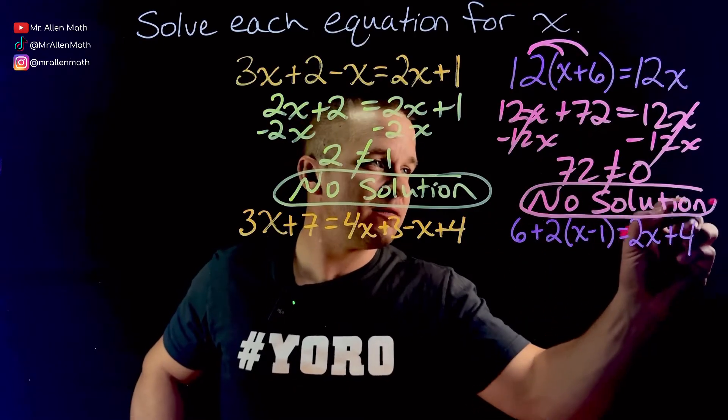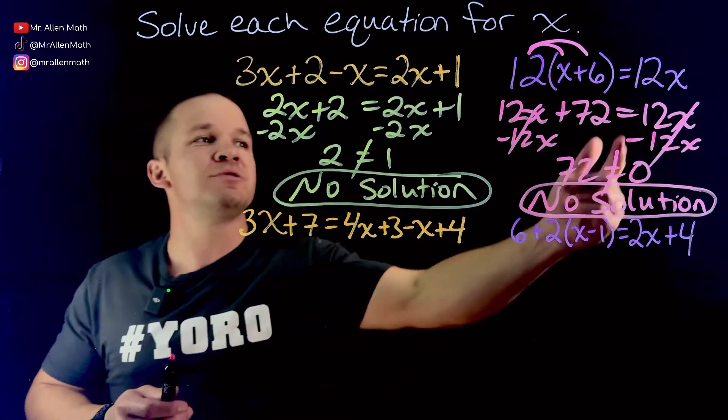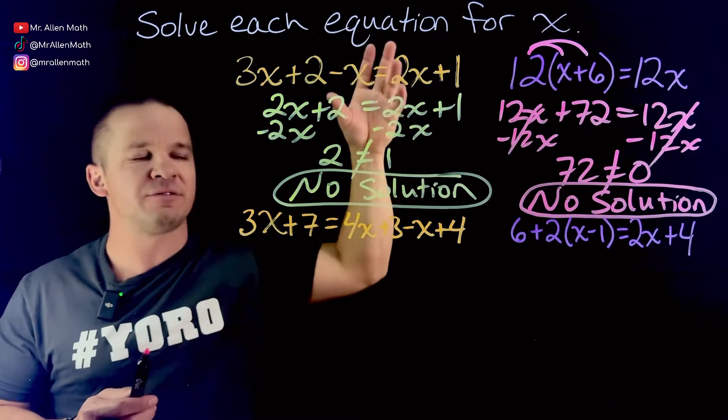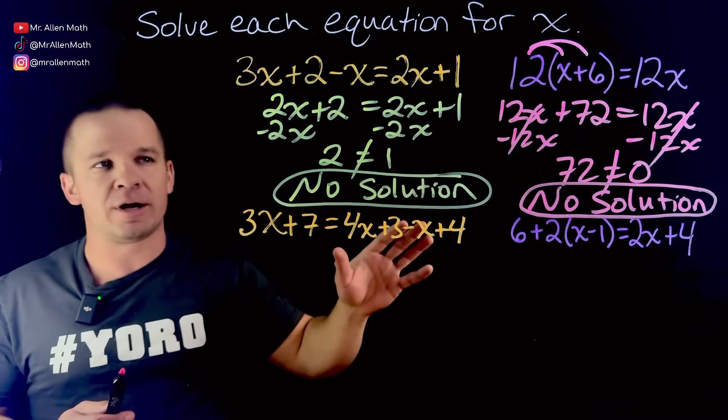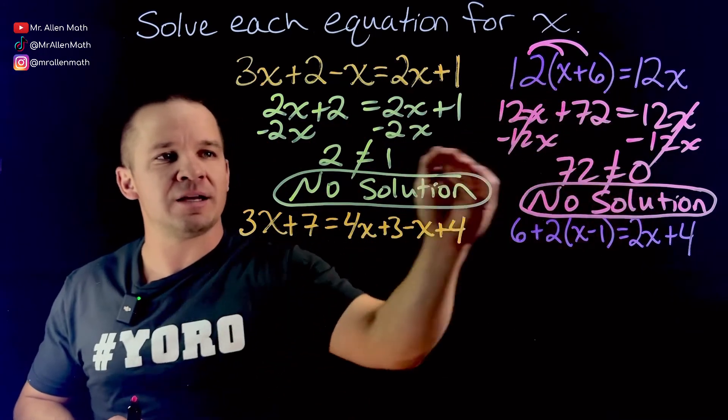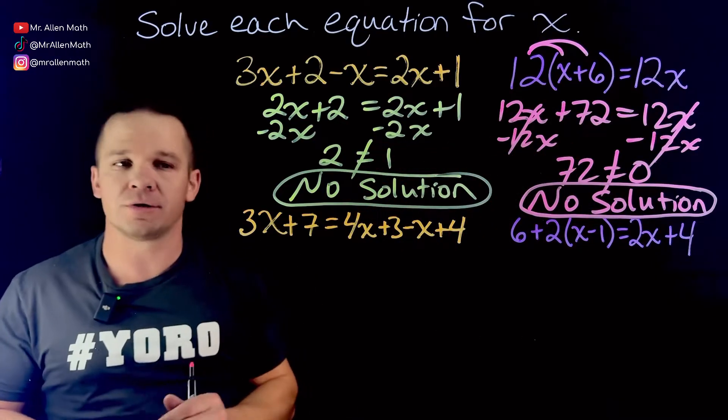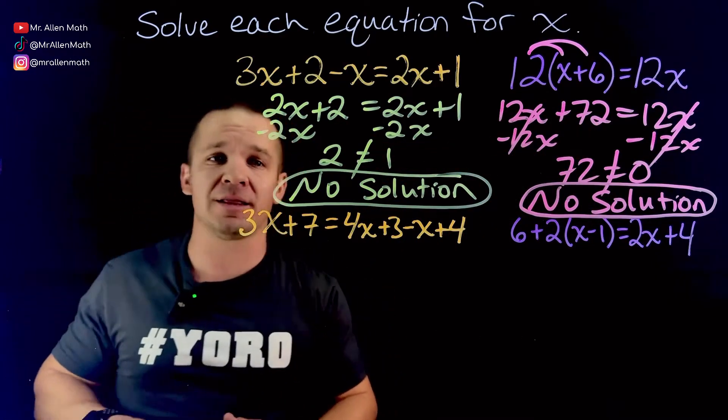You may be able to tell earlier on in the problem, like when you see this, you're like, I see the same coefficient for my variables, I've combined my like terms, it's not gonna work out well. Let's still show it to the very end and say, does not equal, therefore, no solution. Your teachers will be looking for that kind of work in a problem like this.